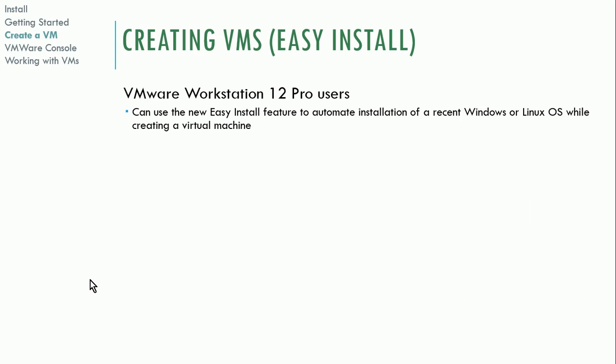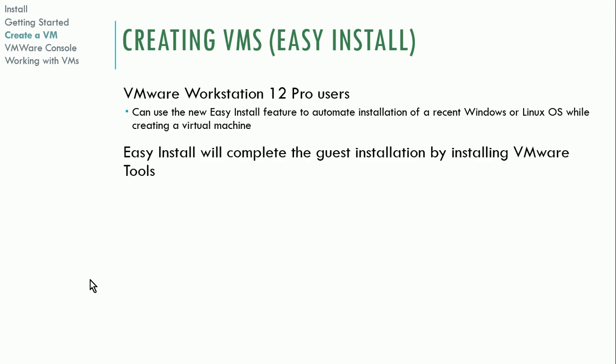For creating a virtual machine, you can use the new easy install feature, which automates the installation of Windows and Linux operating systems. It completes the guest installation by installing VMware tools — slipstreaming those tools right into the installation so you don't have to do it after the fact. If you remember with VirtualBox, you had to add the add-on tools later on. Using the easy install option is certainly a lot faster and is a nice feature.